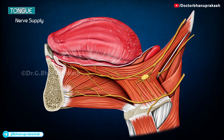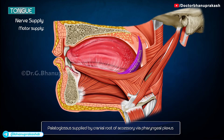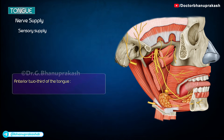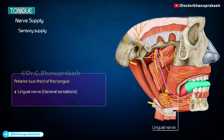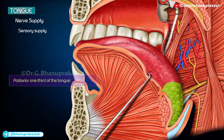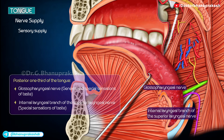Motor supply: all muscles of the tongue, intrinsic and extrinsic, are supplied by the hypoglossal nerve, except the palatoglossus, which is supplied by the cranial root of the accessory nerve via the pharyngeal plexus. Sensory supply: the anterior two-thirds is supplied by the lingual nerve for general sensations and the chorda tympani nerve for taste. The posterior one-third is supplied by the glossopharyngeal nerve, carrying both general and special sensations for taste. The posterior-most part or base of the tongue is supplied by the internal laryngeal branch of the superior laryngeal nerve, carrying special sensations for taste.